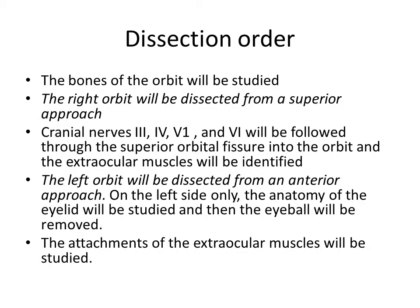The dissection order will be as follows. First of all, we will study the bones of the orbit — I would recommend using a skull in lab for this. Then we will use a superior approach to dissect the right orbit. We will then be able to study cranial nerves 3, 4, V1, and 6, and we will follow them through the superior orbital fissure all the way into the orbit and to the extraocular muscles that they supply.